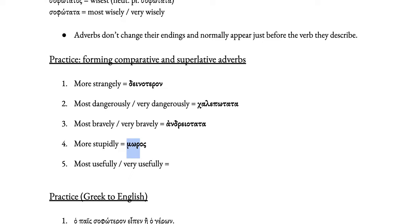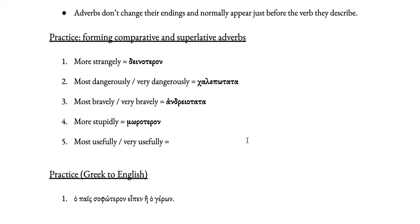More stupidly: start with moros meaning stupid — comparative adjective stem mor-, the o is long, so short o: moroteros — then neuter singular for the adverb: moroteron. Most usefully or very usefully: start with the Greek for useful, chrēsimos — superlative adverb, so look at stem chrēsim-, last vowel is short, so long o: chrēsimotatos — then neuter plural for the adverb: chrēsimotata.